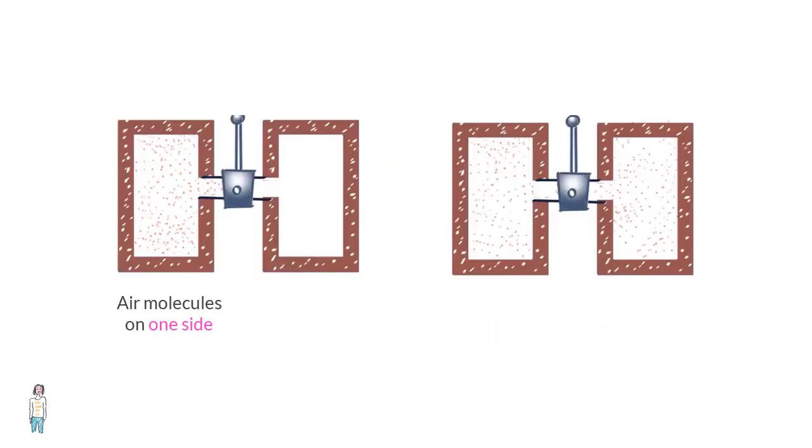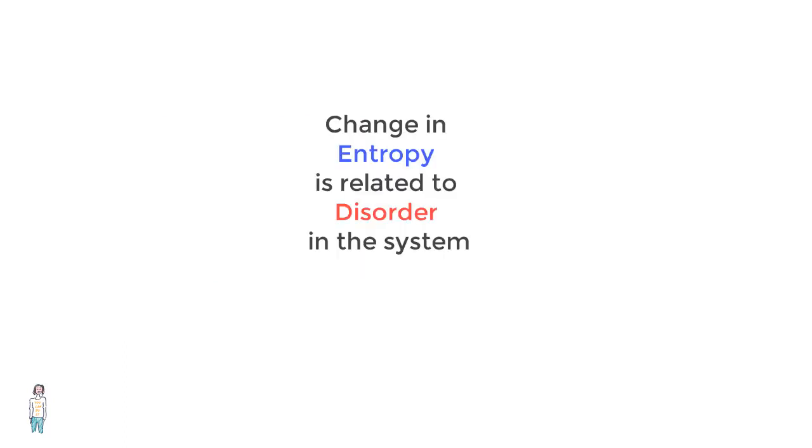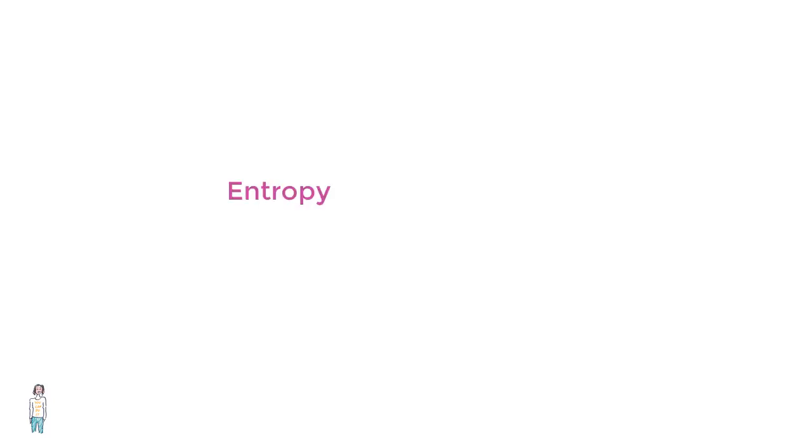Free expansion of a gas also results in increased disorder since the molecules are more free to move around in a larger space and therefore you get more randomness. The molecules can be anywhere in the larger space available to them so a higher element of randomness. Change in entropy has a close correlation with the amount of disorder that gets introduced in the system and we will say that entropy gives a quantitative measure of the amount of disorder.